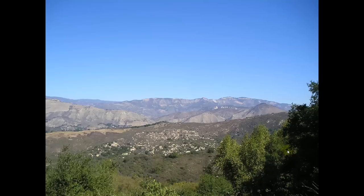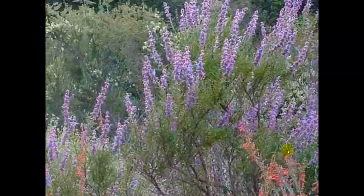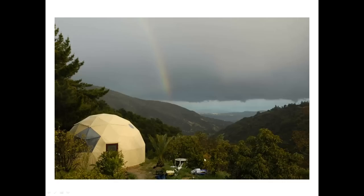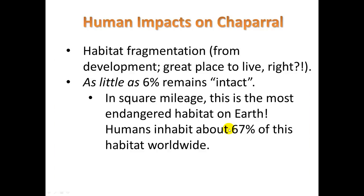Here are some photos. This is the backcountry — the Santa Ynez Mountains. Here are some views of the front country you might see driving up 154. Wildflowers. There's a view looking down to Santa Barbara. Here's our house getting hit by a snowstorm — this was a few years ago, happens every once in a while. The human impacts here are habitat fragmentation because this is a great place to live, so there's lots of land development and not much of it remains intact.